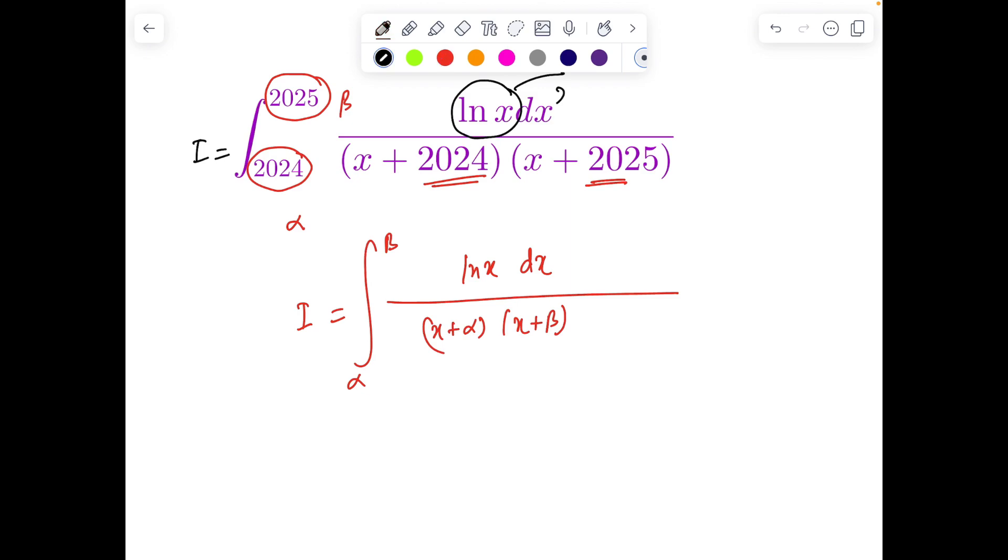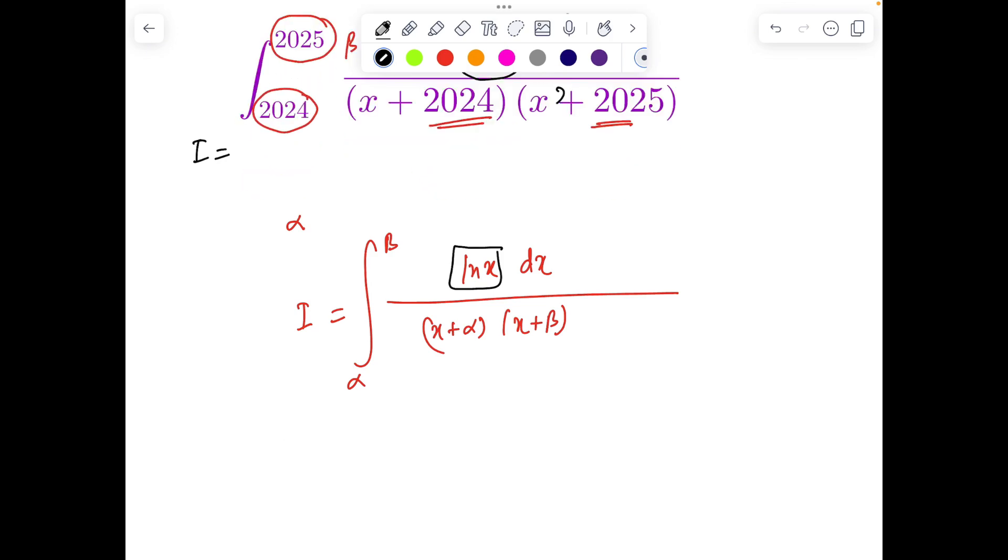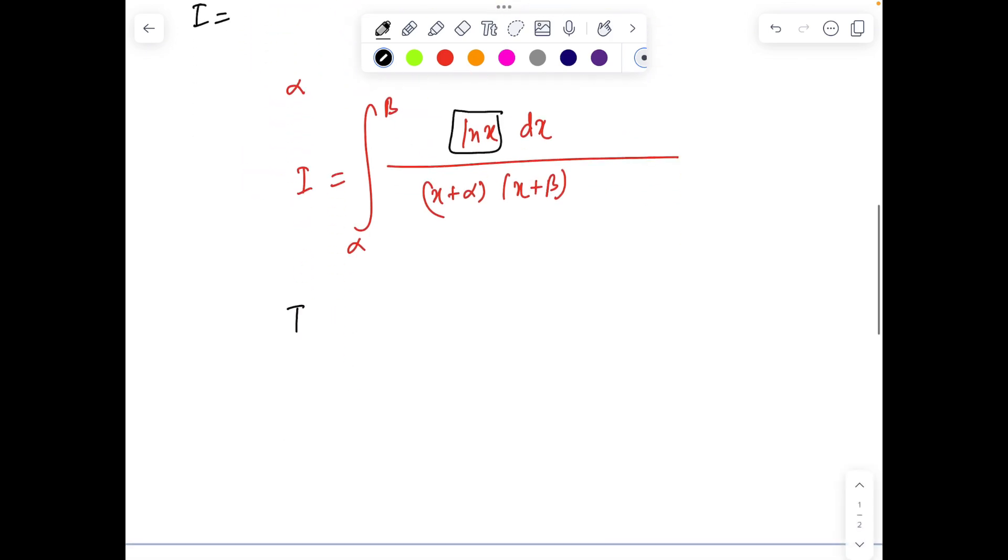Is there any way we can bring ln minus x into picture such that when we add I plus I, it kicks away the log from the system? There is one way out through the power of substitution. Let's make a substitution y = αβ/x.